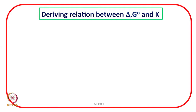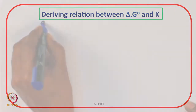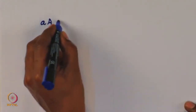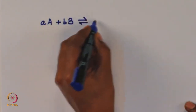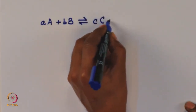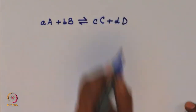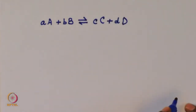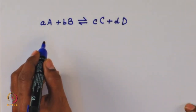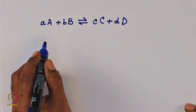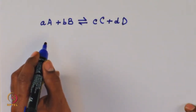Let us start by taking an example of a general reaction of the type: a moles of A are reacting with b moles of B, and this forms c moles of C plus d moles of D. As we discussed earlier, in order to derive a relationship between standard reaction Gibbs energy and equilibrium constant, there are two or three steps.